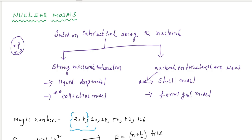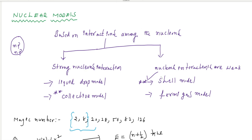If a strong interaction takes place between the nucleons, we can study it using the liquid drop model. In the case of weak interaction between nucleons, we can study the nuclear properties using the shell model and the Fermi gas model. Here we are going to discuss the CSR topic, and I'm going to discuss the shell model first.